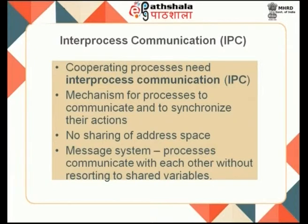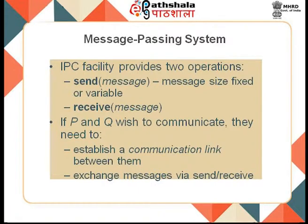The producer and consumer are cooperating processes because they share information. If cooperating processes do not share common memory, they communicate by means of different mechanisms provided by the operating system called inter-process communication facilities. The operating system provides different mechanisms for processes to communicate and synchronize their actions. In an IPC mechanism using message passing, there is no need for sharing address space — processes send messages to one another without a common shared memory. Generally, all IPC mechanisms provide two operations: send and receive.